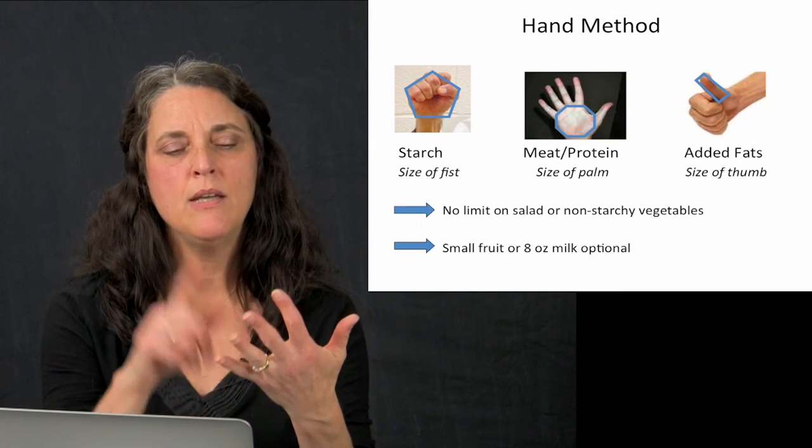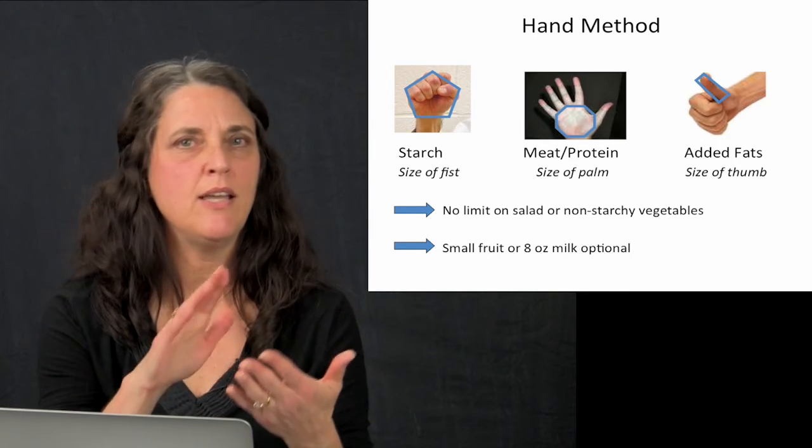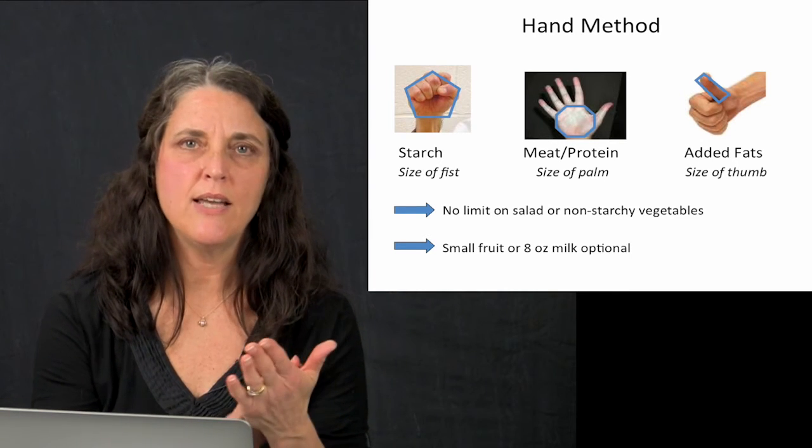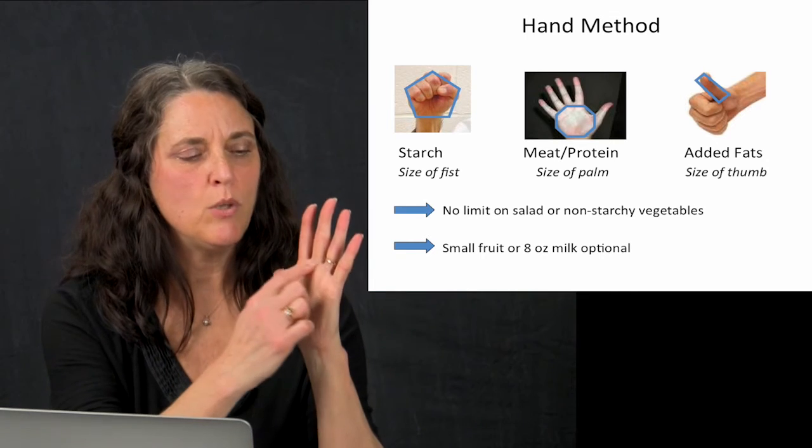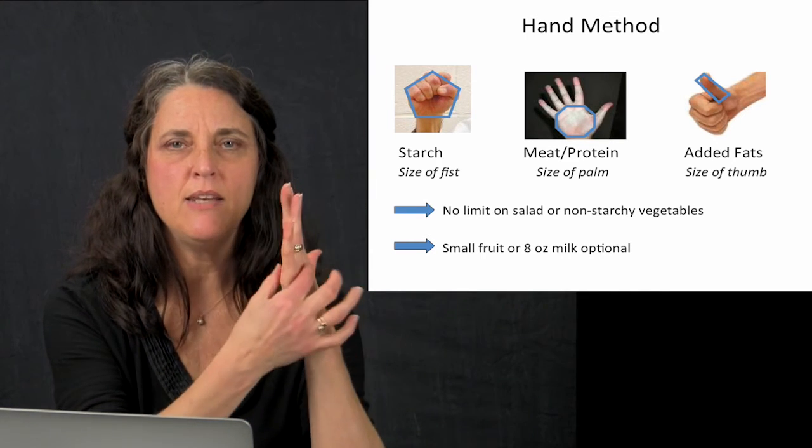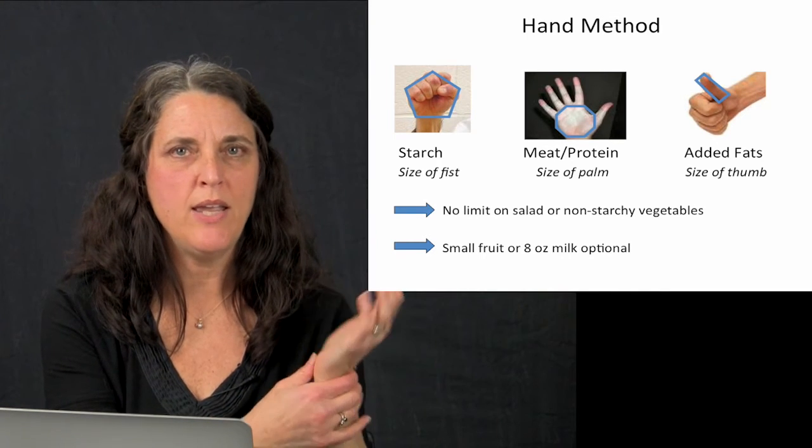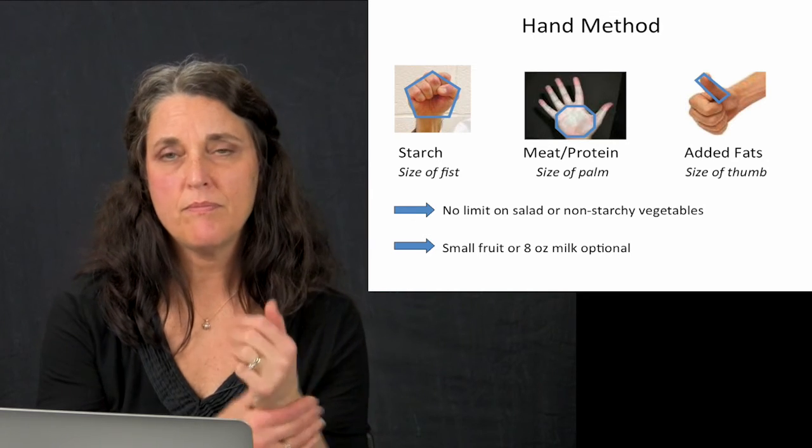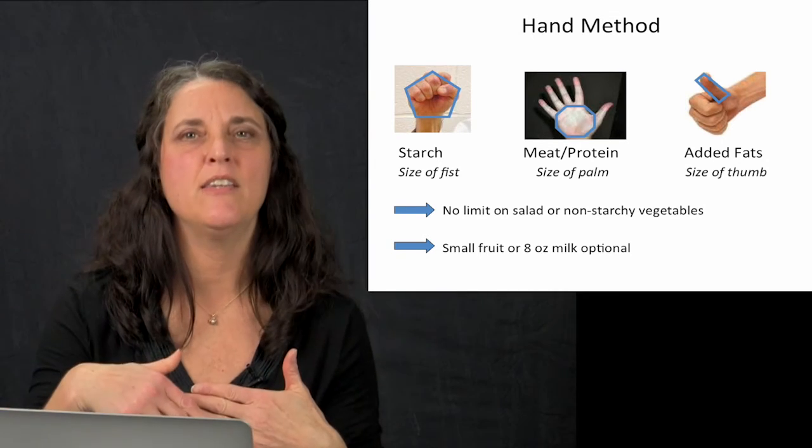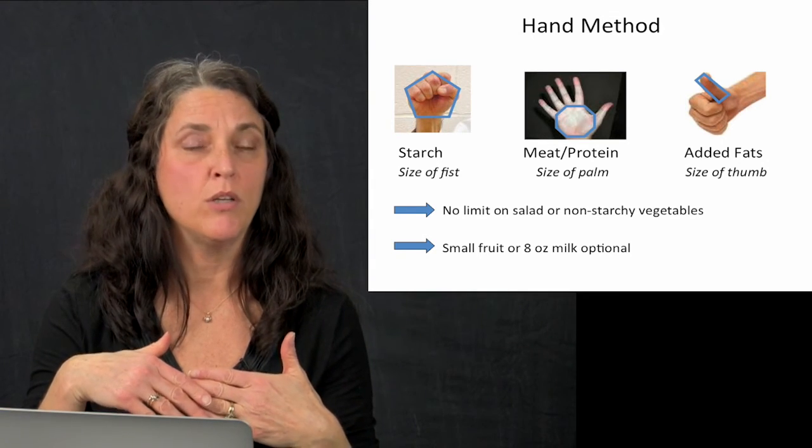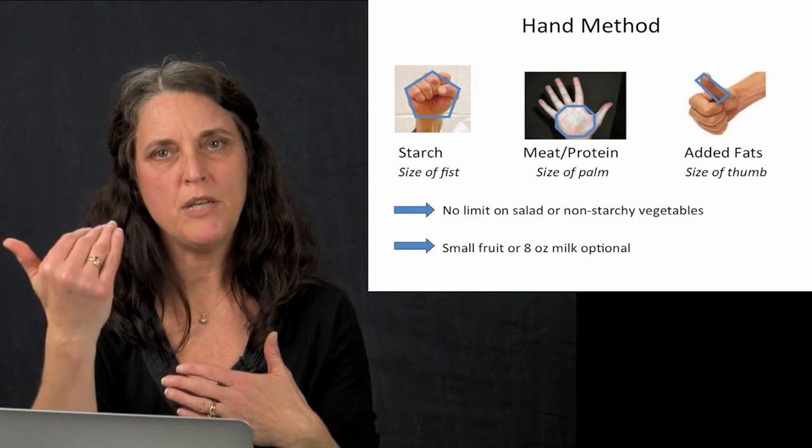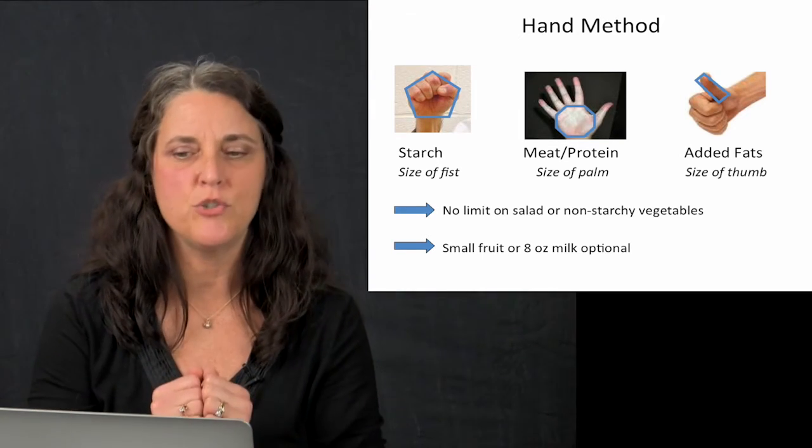Often type 2s have a constellation of issues. They have obesity, they have hyperlipidemia, they have hypertension, they have other problems. So these guidelines can help with that as well. So lean protein, the size and thickness of the palm of their own hand is good advice. I give them a list that says everything on this sheet is a lean meat or lean protein. Another sheet for medium fat and high fat to help guide the choices.